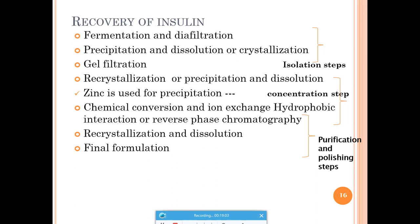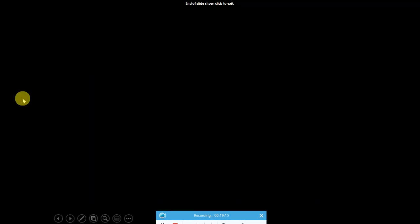In this way we have three widely used products — ethanol, penicillin and insulin — each produced under their specific process design criteria. Thank you for watching. Do subscribe the channel for more updates.